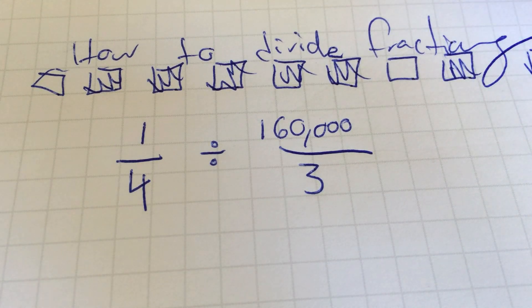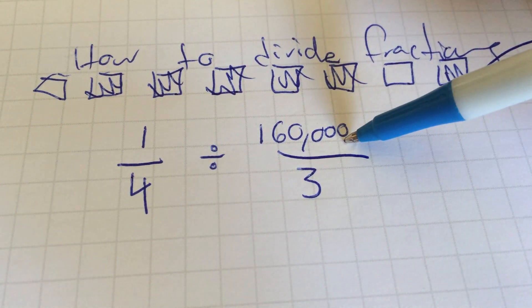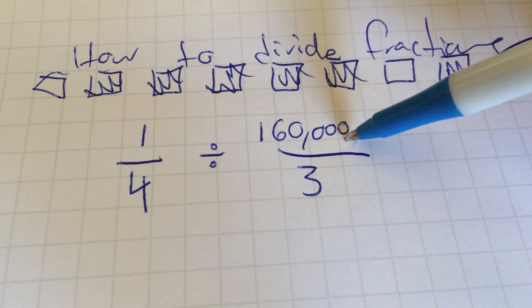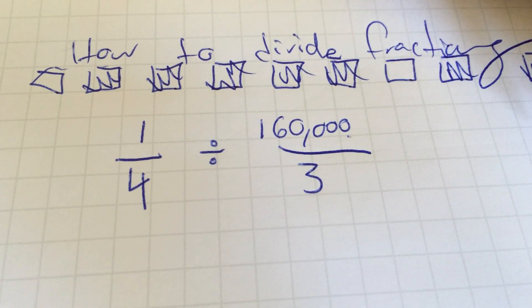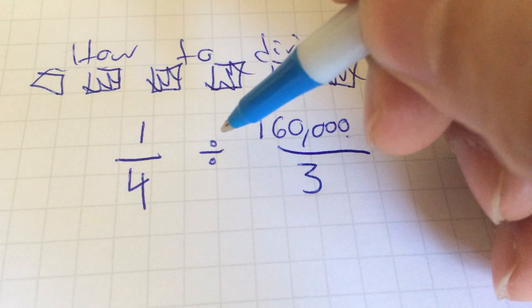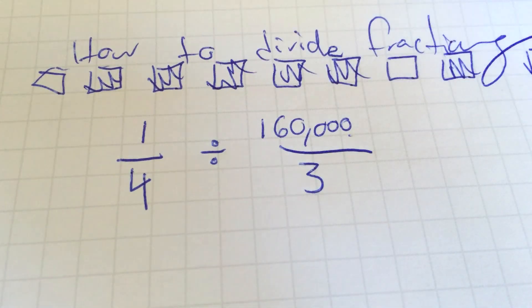The way I do this is you have to divide by the reciprocal. The second number has to be reciprocated. An easy way to remember that is with the division, you multiply the reciprocal of the second number. That's basically the rule.